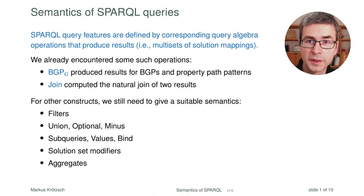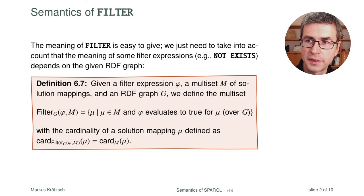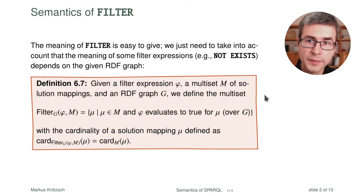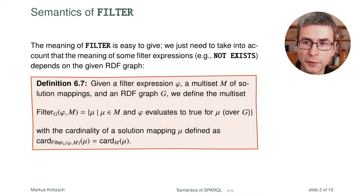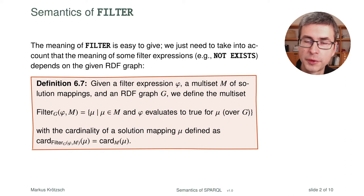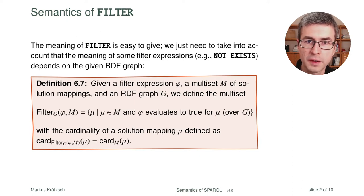Let me go through these things — you will see that mostly it's quite simple to handle the different operations. Filter is a very basic operation. Essentially, what it does is simply remove some of the solution mappings from a given multi-set of solution mappings. It filters out some things based on a certain condition. The only thing we have to be a bit careful about is that some filter conditions also need to know the graph — they have to have access to the graph database. Others don't. For example, if you want to filter solutions where a certain number is greater than 10, you don't need to know the graph database.